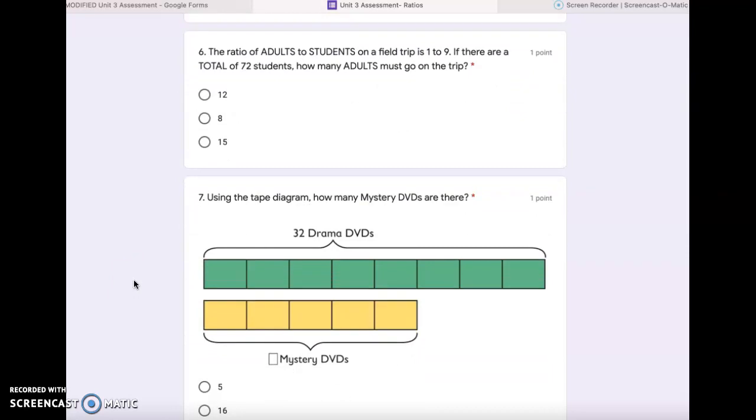Number 6. The ratio of adults to students on a field trip is 1 to 9. If there are a total of 72 students, how many adults must go on the trip? 12, 8, or 15?